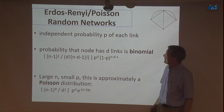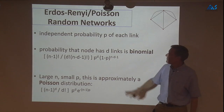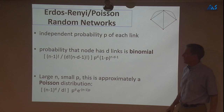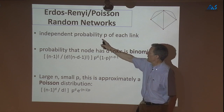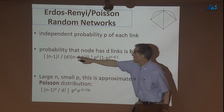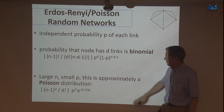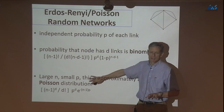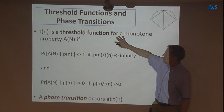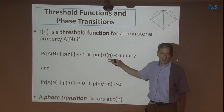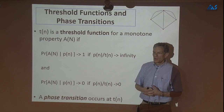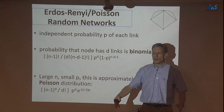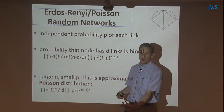Starting with classic random graph models — Erdős-Rényi random graphs — these are useful for understanding basic properties that emerge in graphs. The model has independent probability p of each link on n nodes, giving a degree distribution that is binomial, approximated by a Poisson distribution. What this model gave rise to in the mathematics literature was the theory of threshold functions.